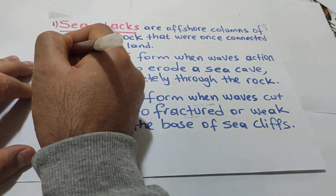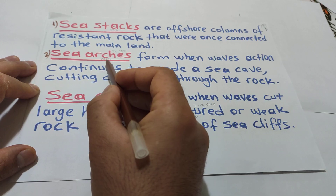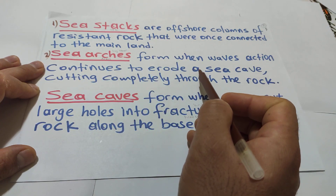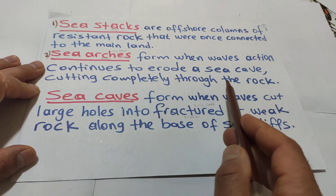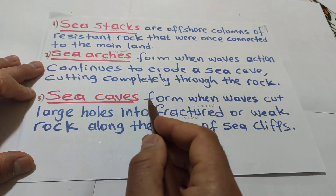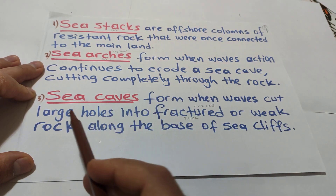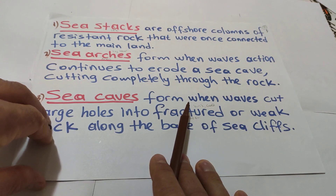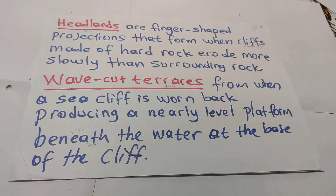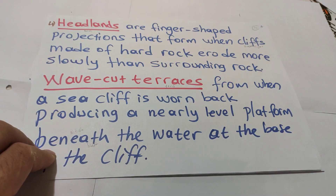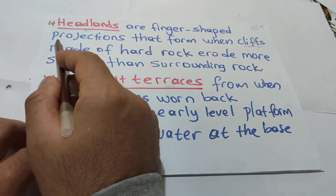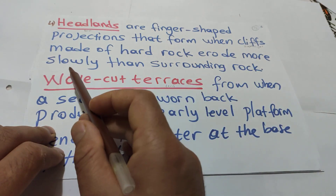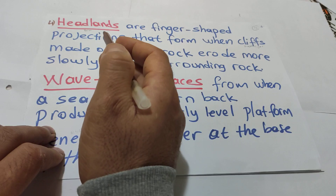The second kind is sea arches, which form when wave action continues to erode a sea cave, cutting completely through the rock. The third kind is sea caves, which form when waves cut large holes into fractures or weak rock along the base of a sea cliff. The fourth kind is headlands — finger-shaped projections that form when cliffs made of hard rock erode more slowly than surrounding rock. Headland means the nose of the beach.